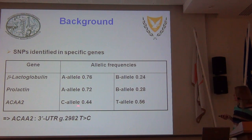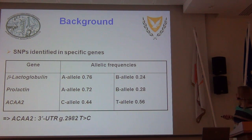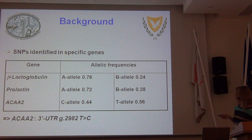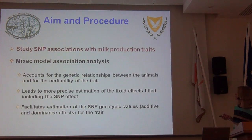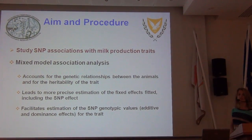Specifically for the ACAA2 allele, the polymorphism, as Dr. Ormore pointed out, is found in the three-prime UTR of the gene. The allele frequencies are quite comparable but not quite equal: 44% of the animals in the population have the C allele, and 56% have the T allele. What we want to do in investigating these genes is to study their associations with milk production traits by using mixed model association analysis.